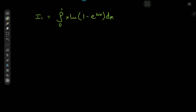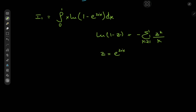The integral I₁ is super interesting. To solve it we'll use the series expansion log(1 − z) = −∑_{k=1}^{∞} z^k / k. In our case z = e^(2ix), so log(1 − e^(2ix)) = −∑_k e^(2ikx) / k. Making use of this series expansion, I₁ equals the negative of the integral from 0 to 1 of x times ∑_k e^(2ikx) / k dx.